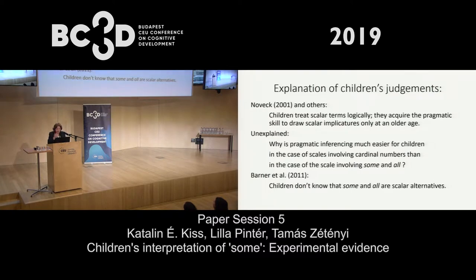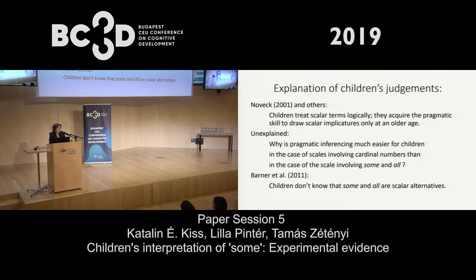As for children, there have been various explanations why they act differently. Novak claimed that the logical meaning of these sentences is accessible to children, and they are unable to draw the scalar implicatures because they are pragmatically still immature. But this explanation doesn't explain why 90% of children accept 'some horses jumped over the log,' and why only a third of them accept 'two of the horses have jumped over the log,' when the same kind of scalar implicature has to be carried out in both cases.